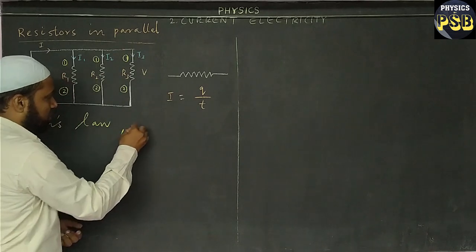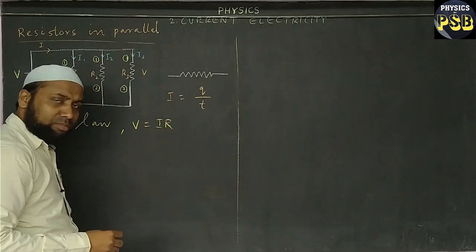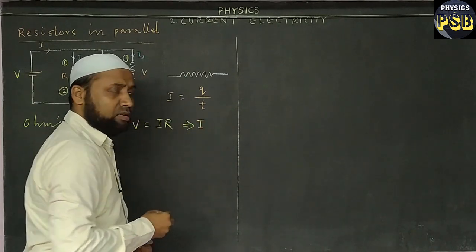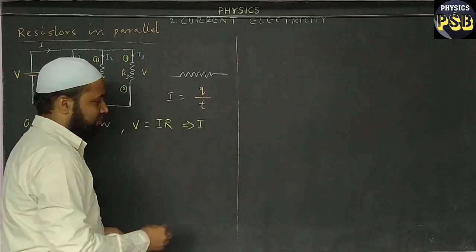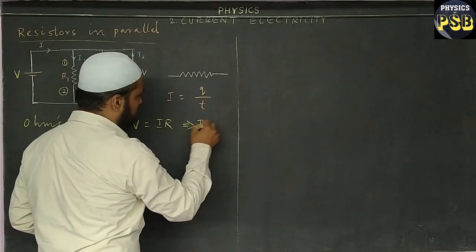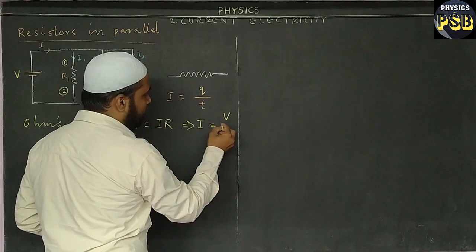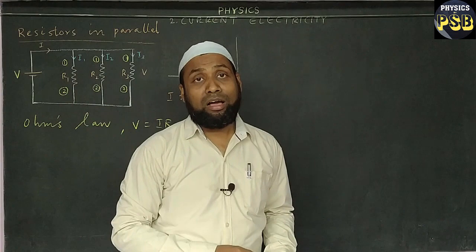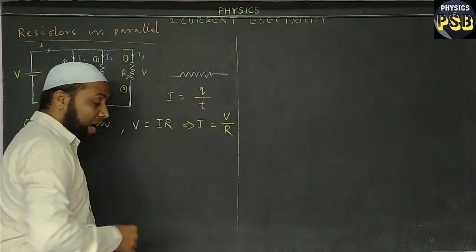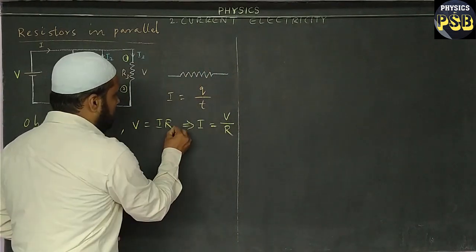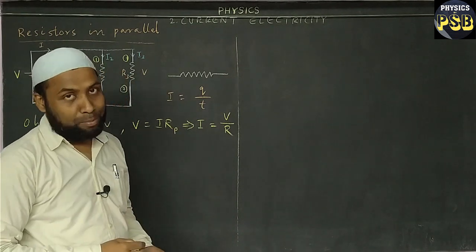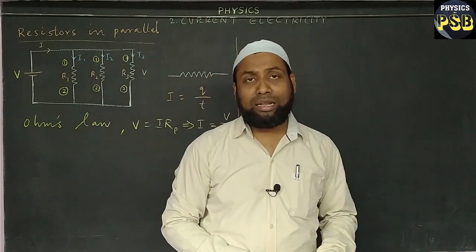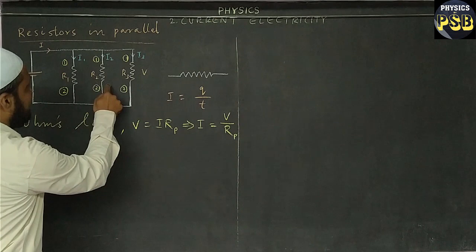From Ohm's law, I1, I2, and I3 values can be obtained this way. We know Ohm's law is V equals to IR. From this, I is obtained by taking R to the left-hand side, so we get the value of I as V upon R.